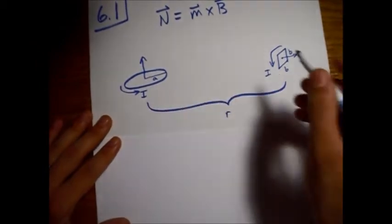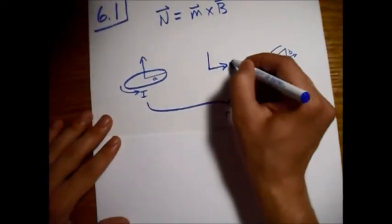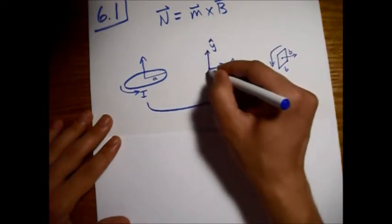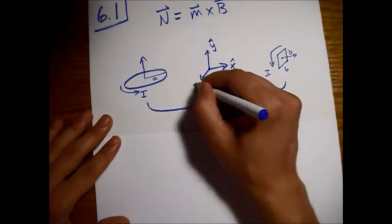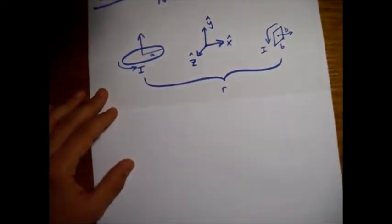And I guess we need some axes. So I'm just going to call this way X and this way Y, and then Z would be coming out of the page.